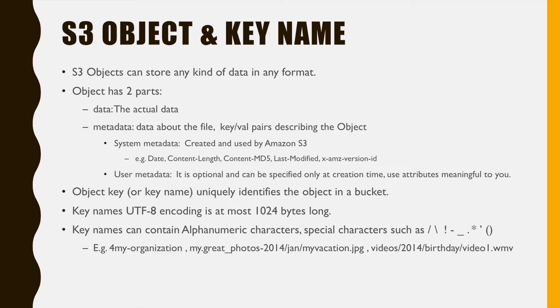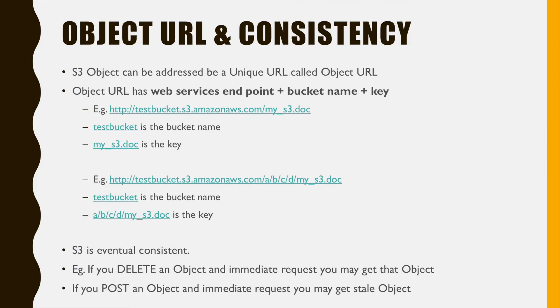Metadata is of two types: user metadata, inserted by the user — note it can only be inserted during creation time — and system metadata, which is created and used by AWS. Inside a bucket, objects are identified uniquely by key name. Key names can contain alphanumeric characters and special characters including slashes. Each S3 object can be identified with a unique URL called the object URL, which contains the endpoint, bucket name, and key name. In the exam, you will be given object URLs and need to identify the bucket name and key name.